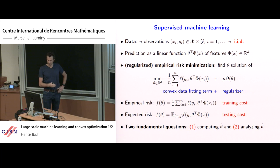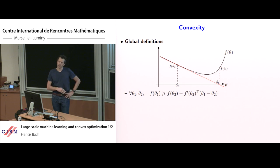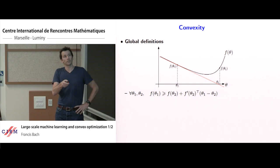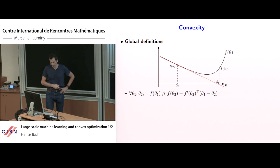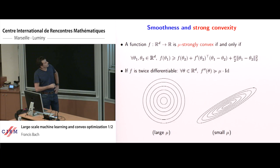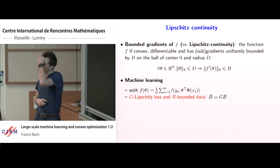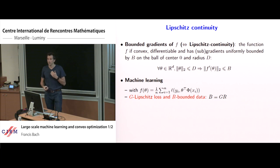I will mostly consider a convex loss both for optimization and for testing. Regarding convexity: convex functions are above their tangents, and this is essentially the only property I will use today. Regarding assumptions on the loss function: either it is non-smooth and I can only assume Lipschitz continuity — this is the case for the hinge loss — corresponding to bounded gradients; or if the loss is Lipschitz, the full cost function is also Lipschitz.